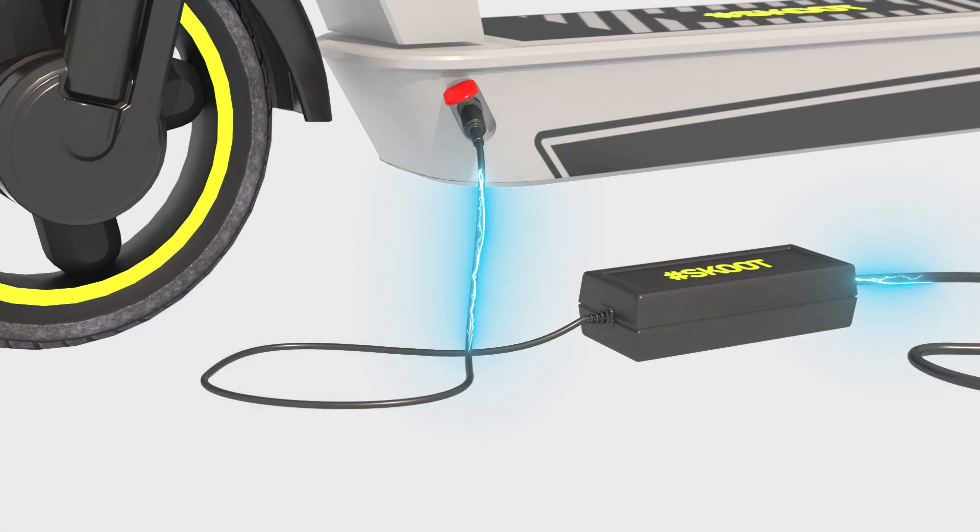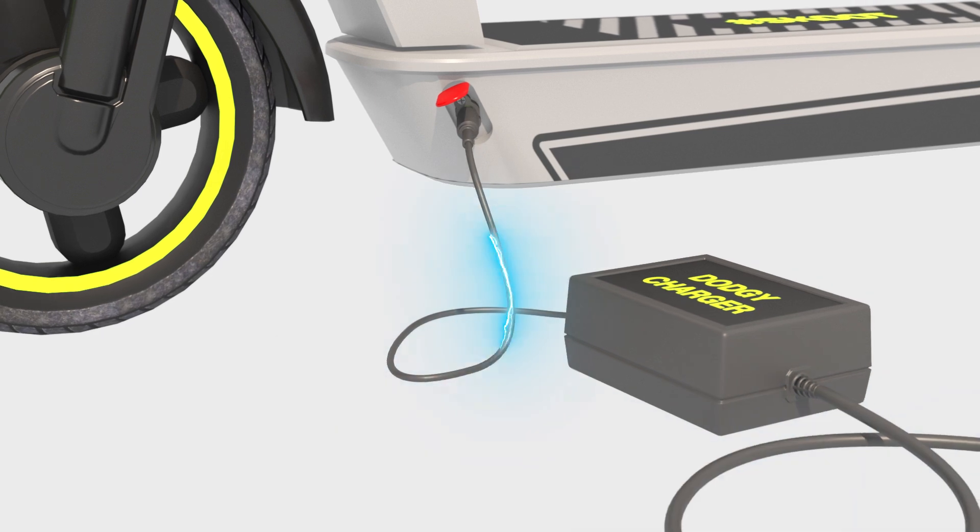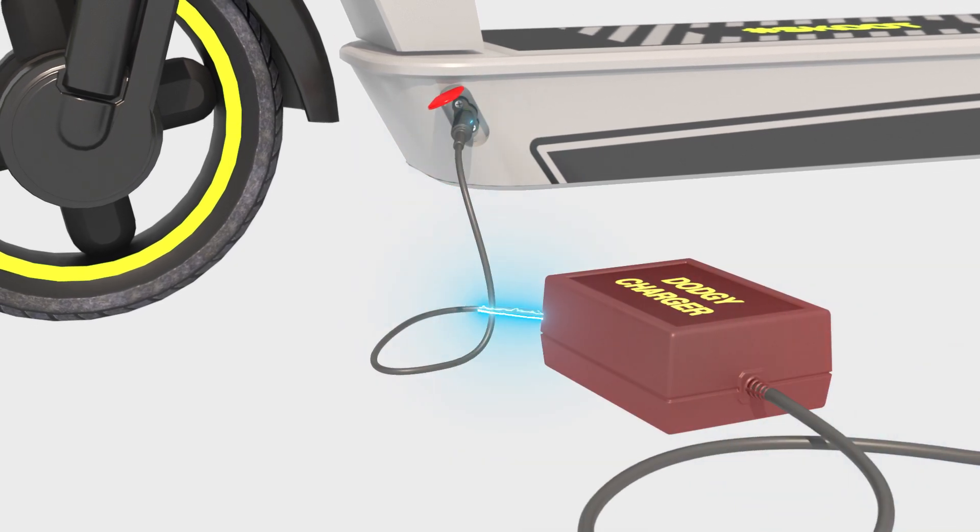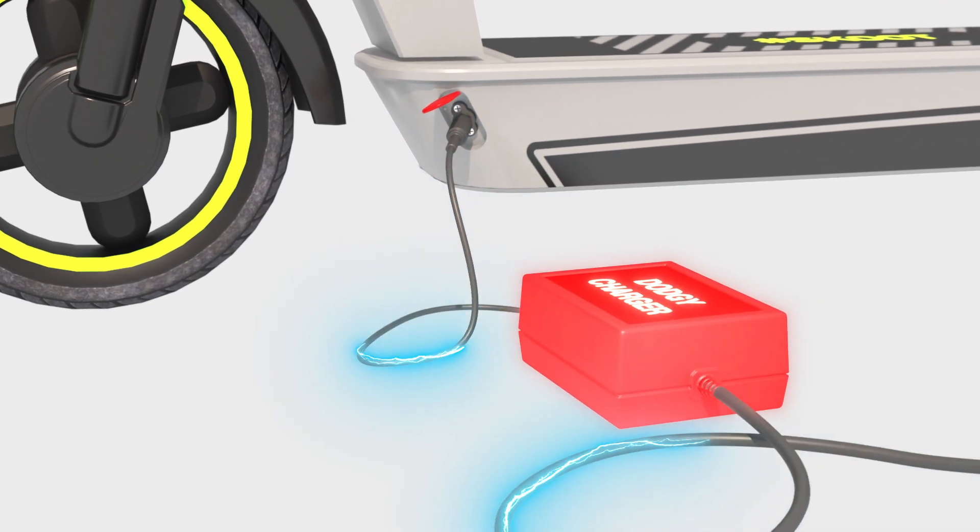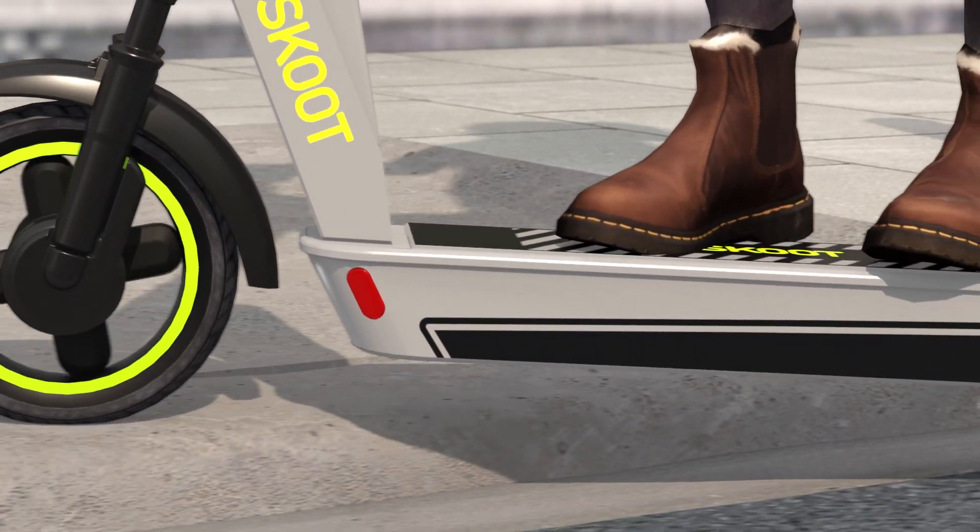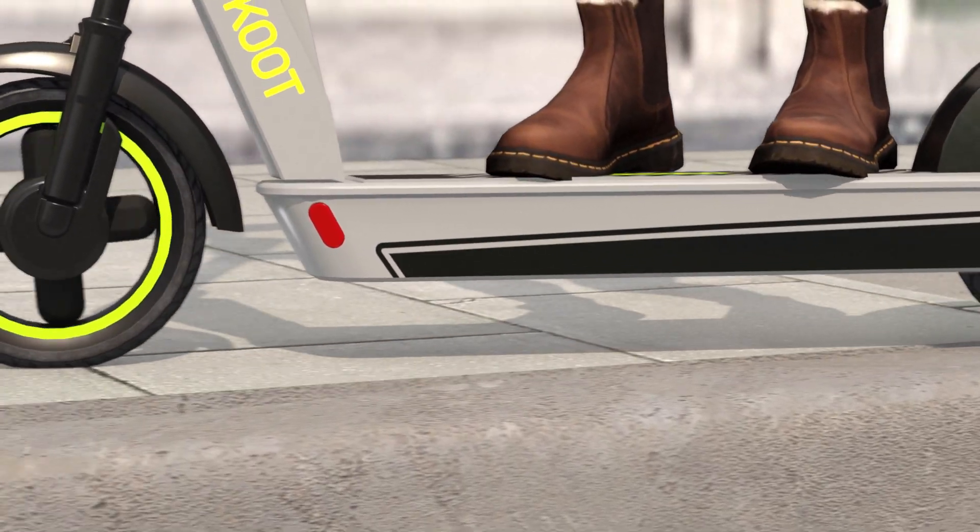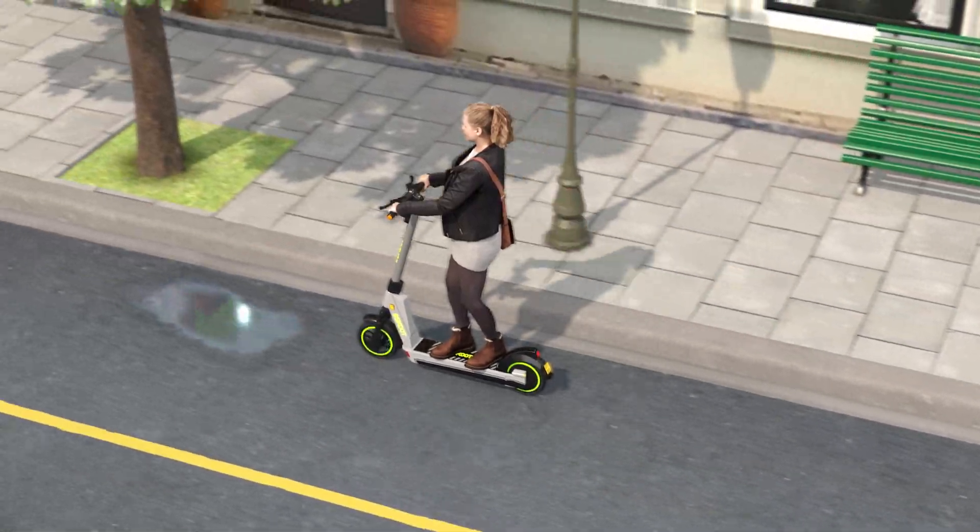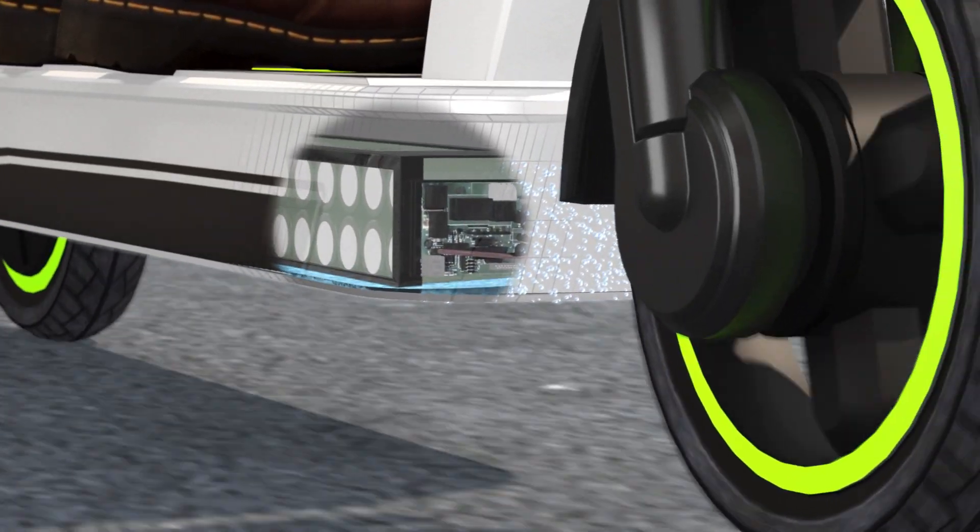Some examples of this misuse are overcharging, charging with an incompatible or non-compliant charger, damage caused by a harsh impact, or water entering the battery enclosure.